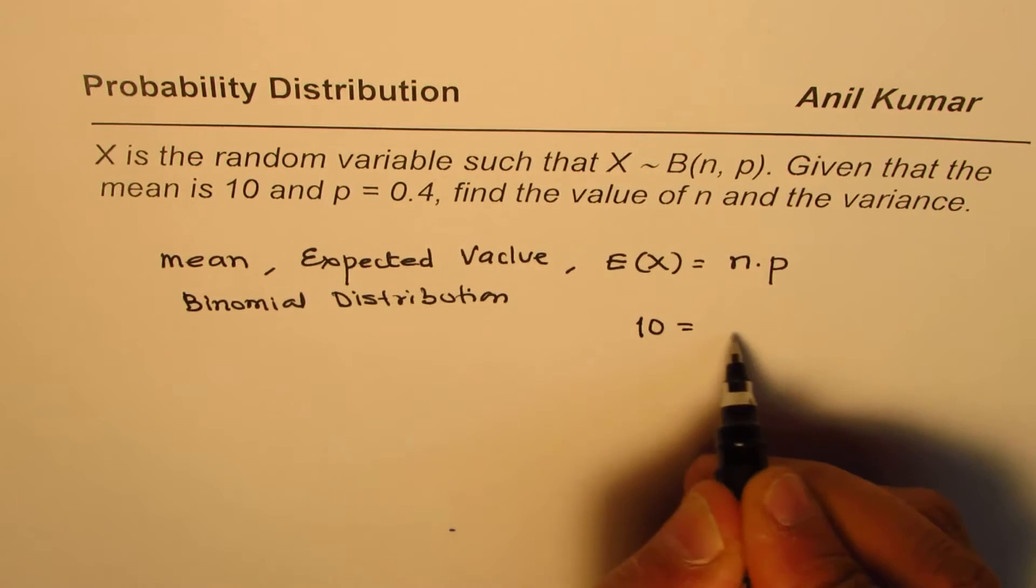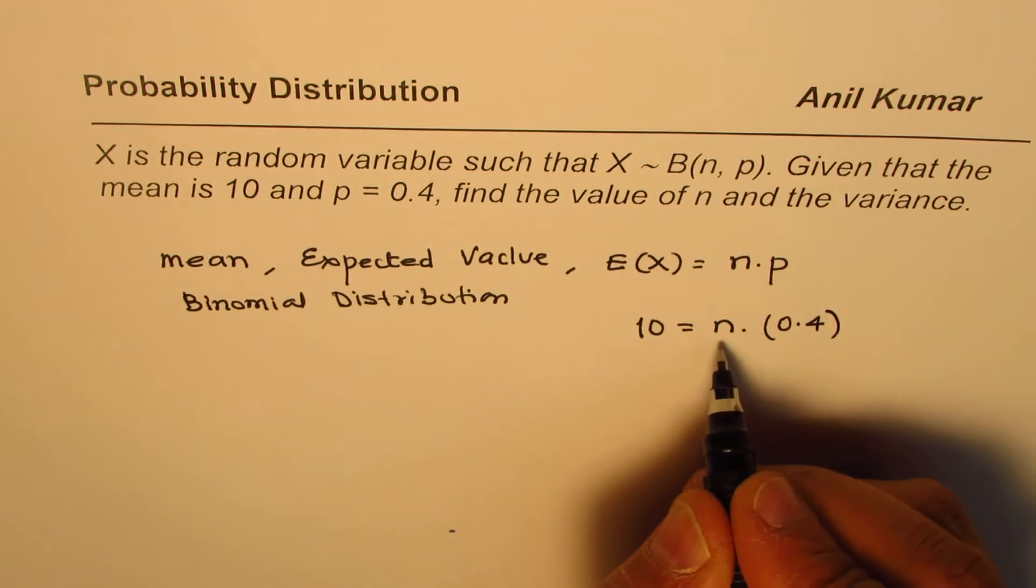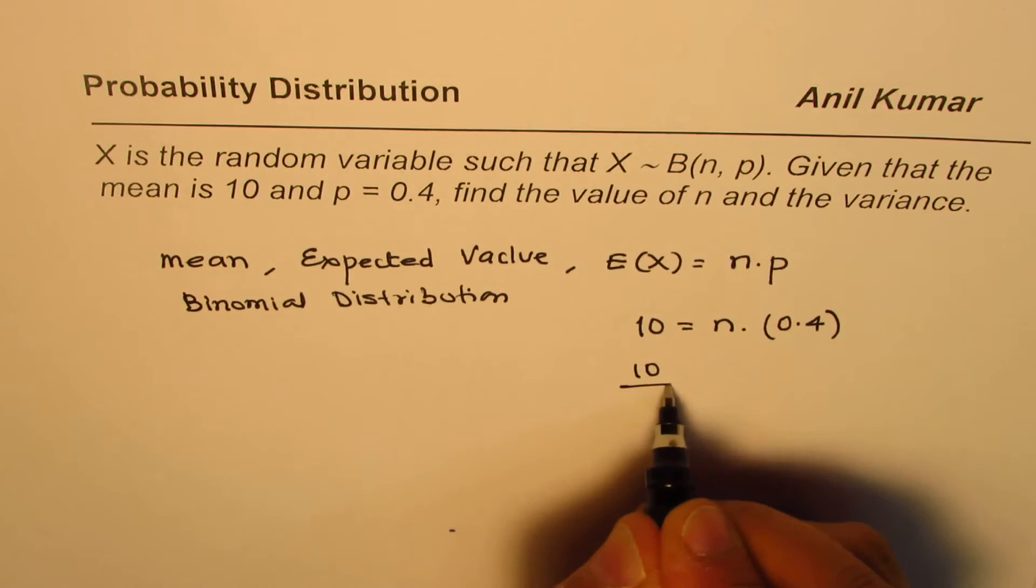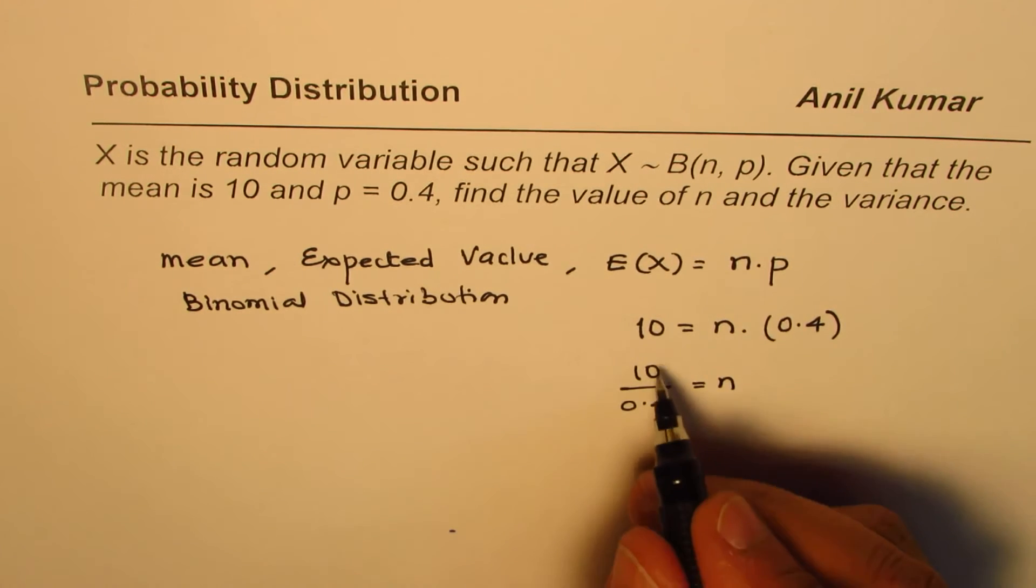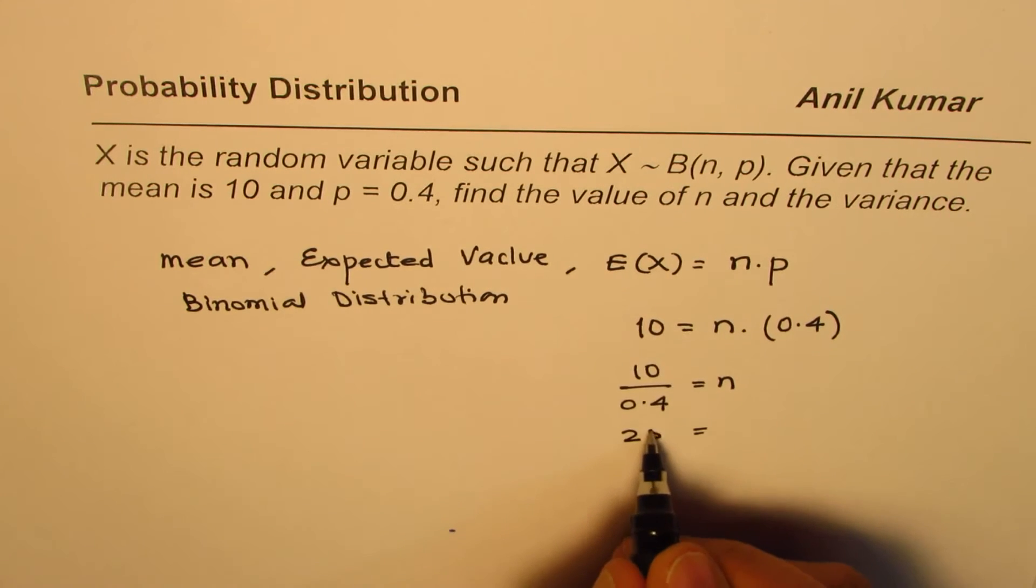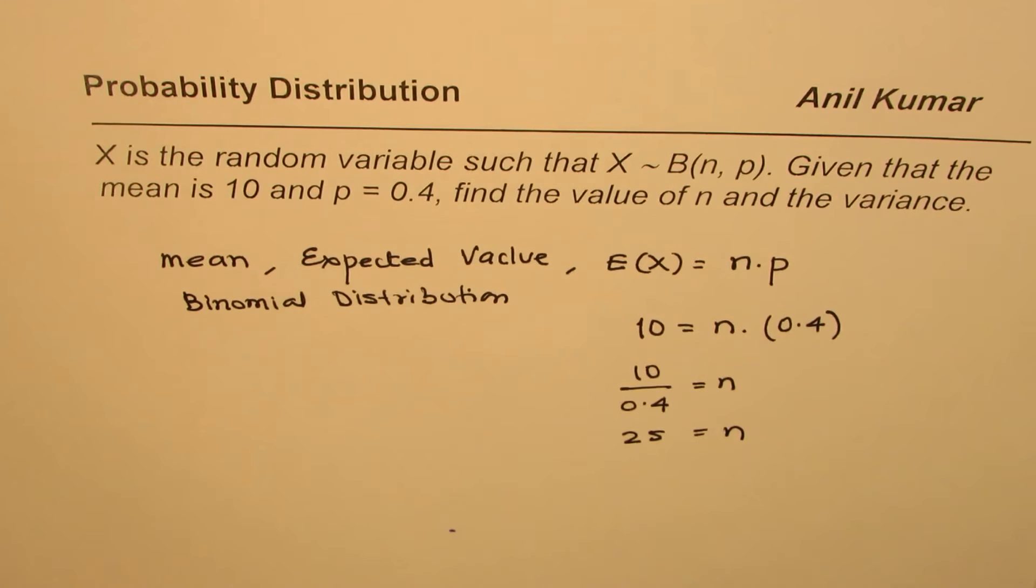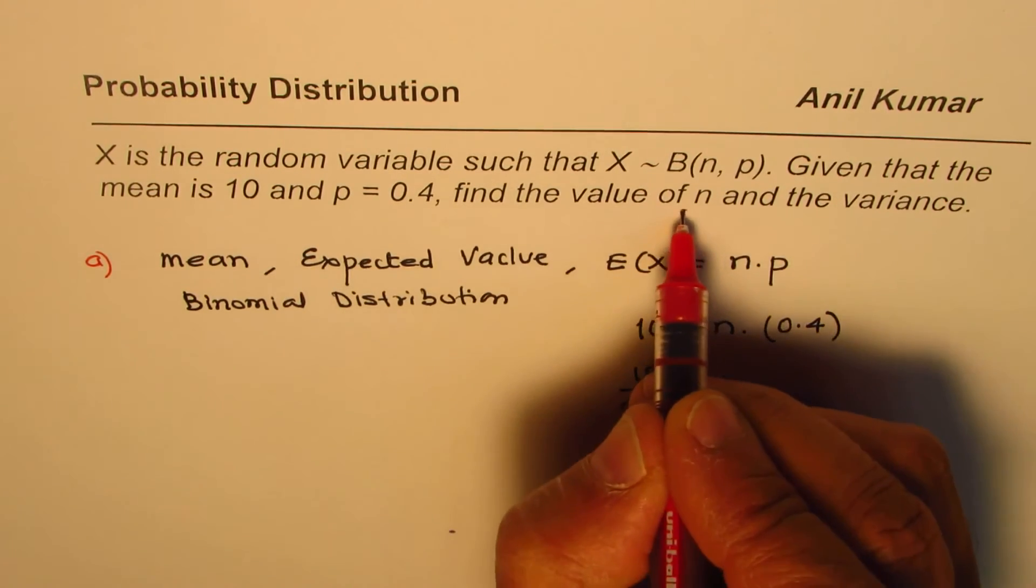So we have 10 equals n times the probability, which is 0.4. We can find n by dividing 10 by 0.4, which gives us 25. So n equals 25. That is part a—to find the value of n.